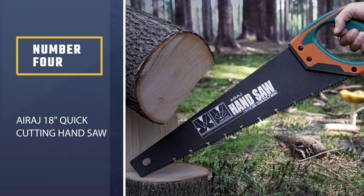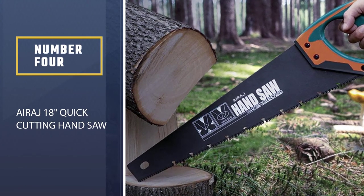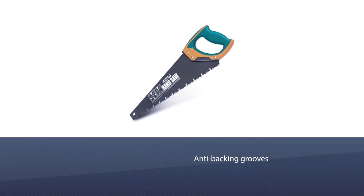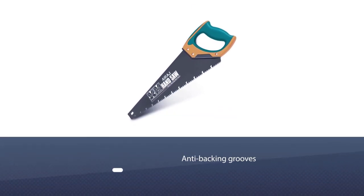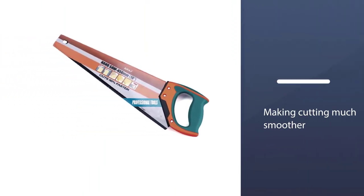Number four: Iraji 18-inch Quick Cutting Hand Saw. For quick cutting and comfort, the Iraji hand saw. At 18 inches, it's plenty long enough for cutting through even large wood such as thick trees.